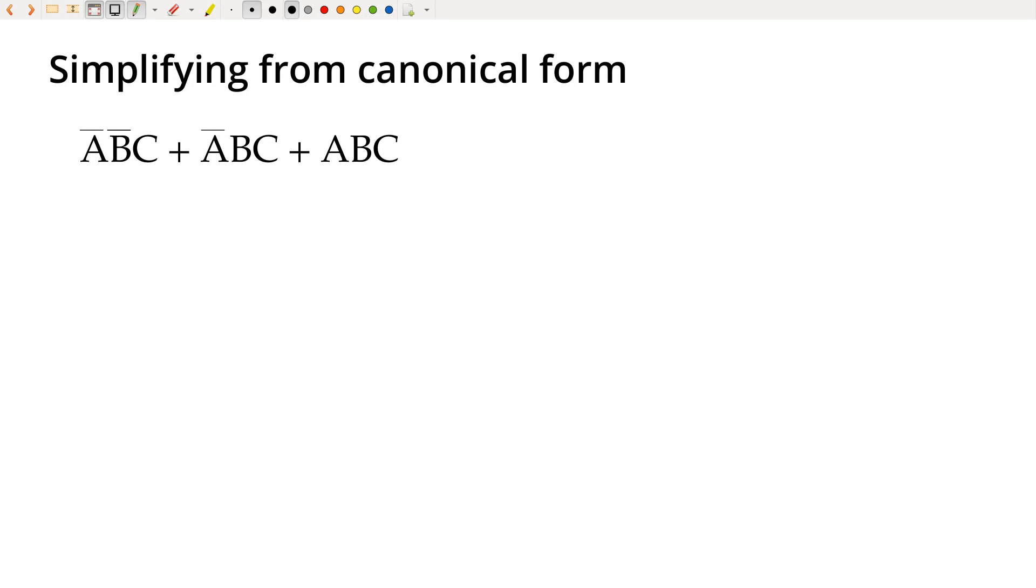In this video, I'm going to do a quick example of simplifying a Boolean equation from the sum of products canonical form and trying to minimize this down as far as I can. We've got this and we'll use this as a test example.